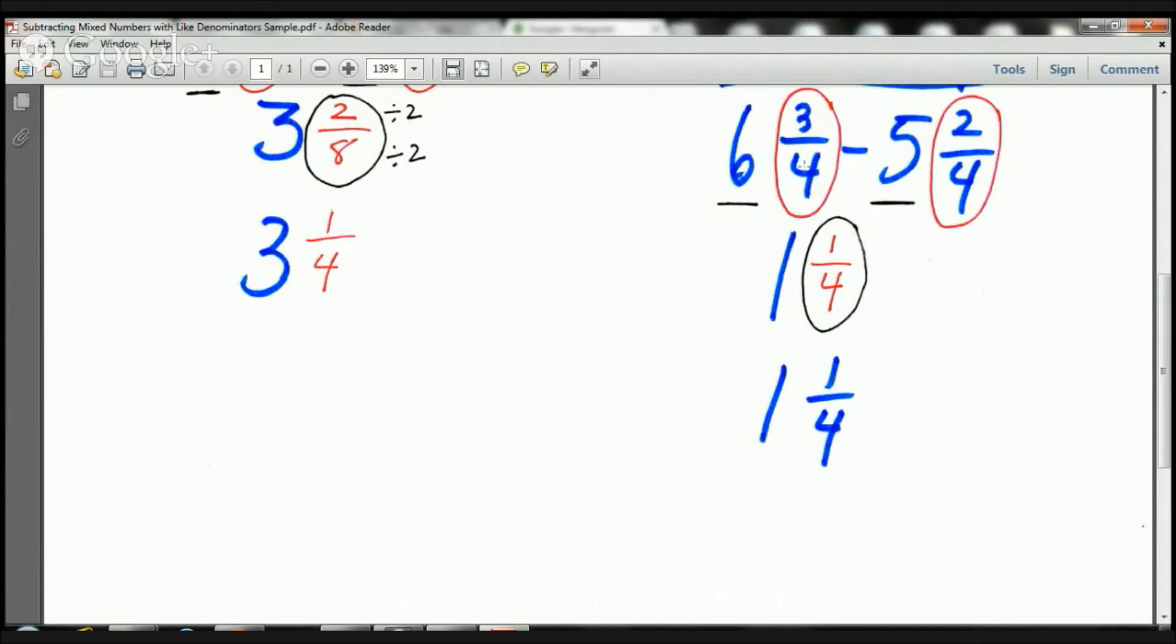So here I'm going to have 1 and 1 4th. And that's the answer. Therefore, 6 and 3 4ths minus 5 and 2 4ths equals 1 and 1 4th. And that's it, boys and girls. Piece of cake, right? That's right.